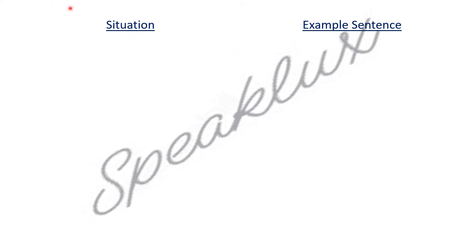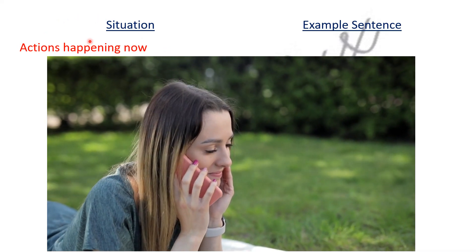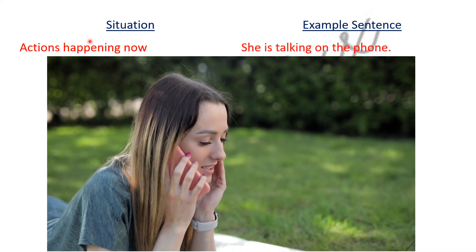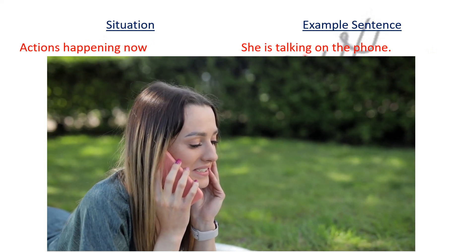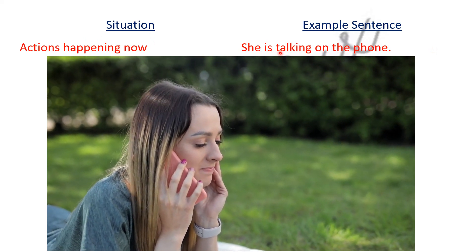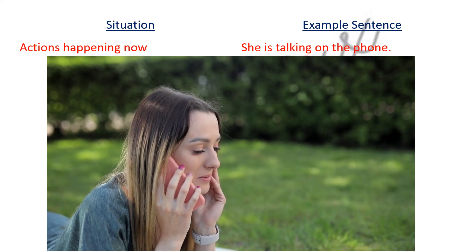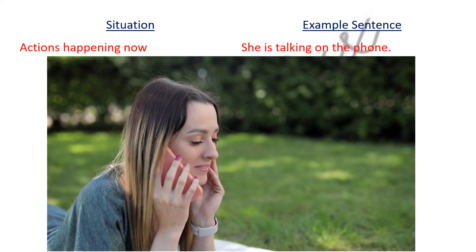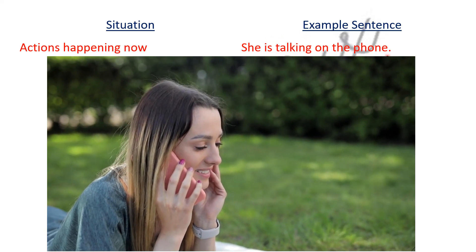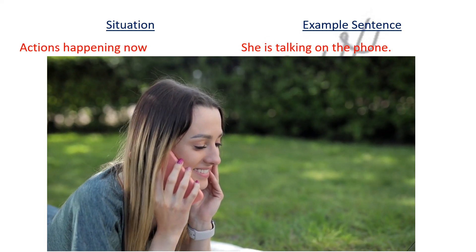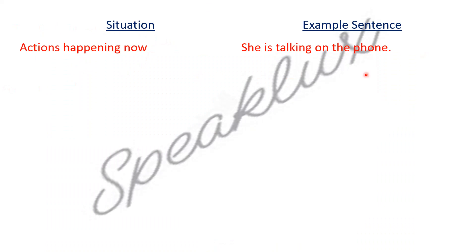Without wasting time, let's start with the first situation and that is actions happening now. Any action that is happening in the present, whenever you have to define it, then you will use Present Continuous Tense. For example, if someone is talking on the phone, then I will say she is talking on the phone. She is singular, so we put 'is' plus talk plus ing. This is the rule to form Present Continuous Tense. She is talking on the phone. Whenever there is any action in front of you, you will structure it in this form.